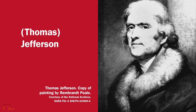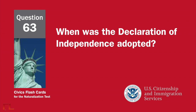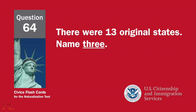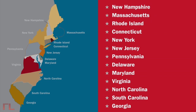Who wrote the Declaration of Independence? Thomas Jefferson. When was the Declaration of Independence adopted? July 4th, 1776. There were 13 original states. Name three. New Hampshire, Massachusetts, Rhode Island, Connecticut, New York, New Jersey, Pennsylvania, Delaware, Maryland, Virginia, North Carolina, South Carolina, Georgia.